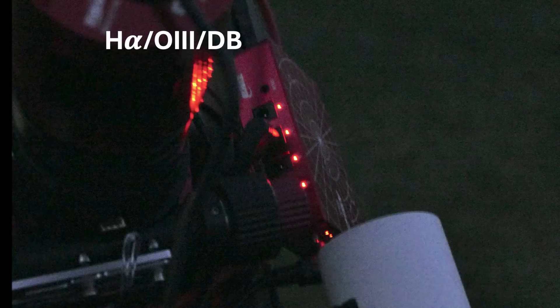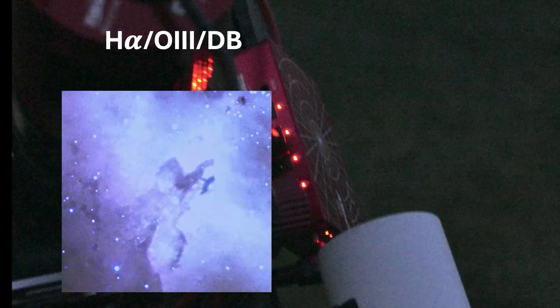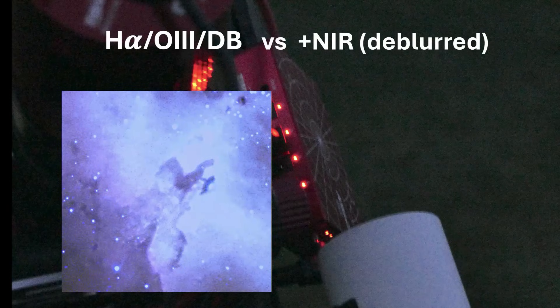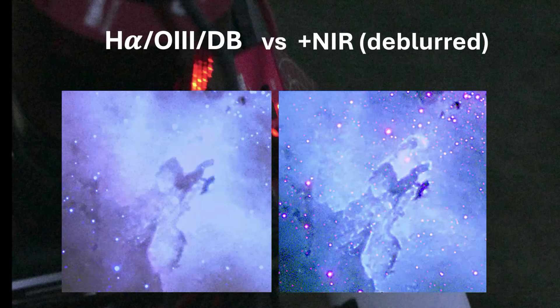The combination of hydrogen alpha, oxygen 3, and dark blue results into the following color image. In comparison, if I add the near-infrared and do a deconvolution, I'm achieving this image.